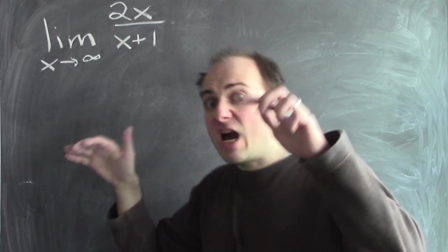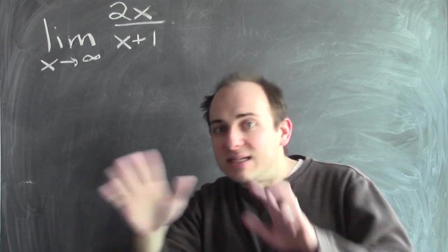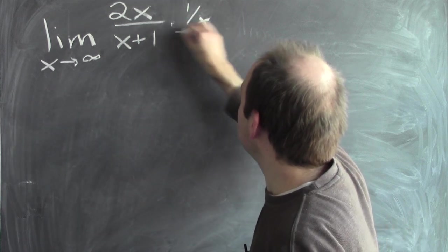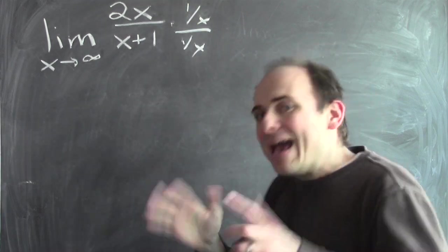Instead, I'm going to sneak up on this limit problem by wearing a disguise. I'm going to multiply by a disguised version of 1. I'm going to multiply by 1 over x divided by 1 over x. Now, this is just 1.